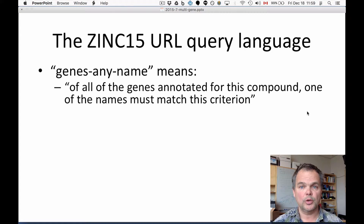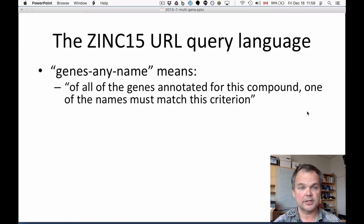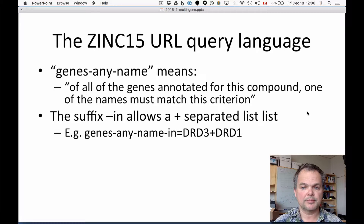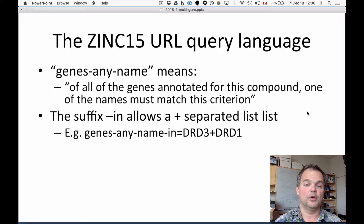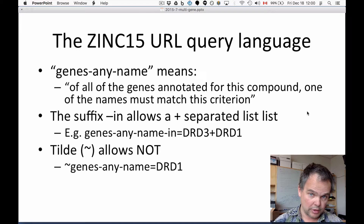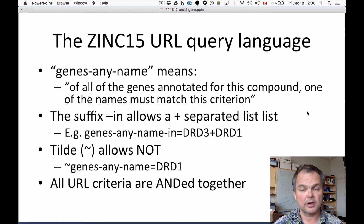I want to talk a little bit about the ZINC15 query language, used both for web pages and individual queries. The idea: 'genes_any_name' means of all the genes annotated for this compound, one of the names must match the criterion. The suffix '_in' allows a plus-separated list — thus 'genes_any_name_in drd3+drd1' means the compound must match one of drd1 or drd3. Tilde allows NOT — thus '~genes_any_name drd1' means this compound is not known to bind drd1. All URL criteria are ANDed together.